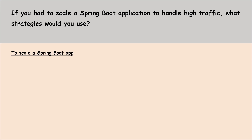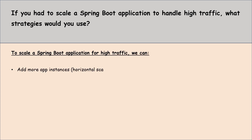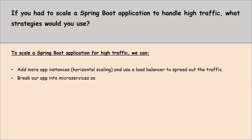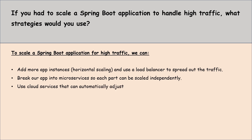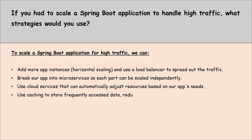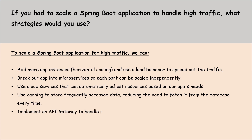To scale a Spring Boot application for high traffic, we can add more app instances like horizontal scaling and use a load balancer to spread out the traffic. Break out our app into microservices so each part can be scaled independently. Use cloud services that can automatically adjust resources based on our application needs. Use caching to store frequently accessed data, reducing the need to fetch it from the database every time.